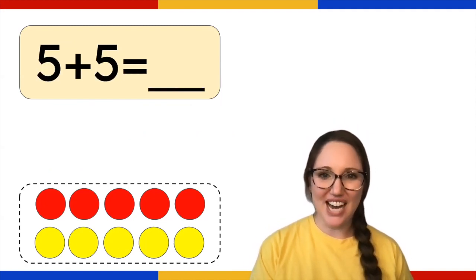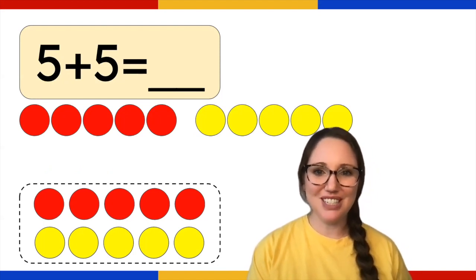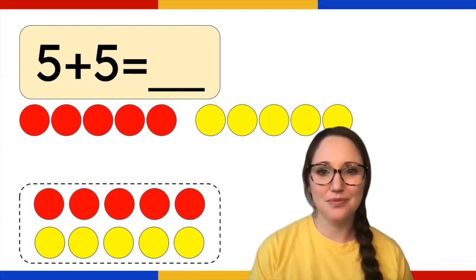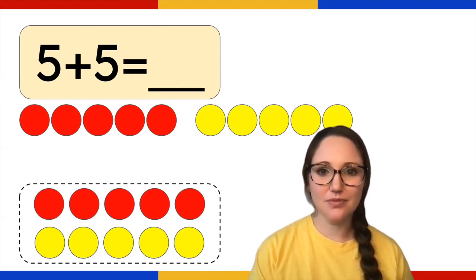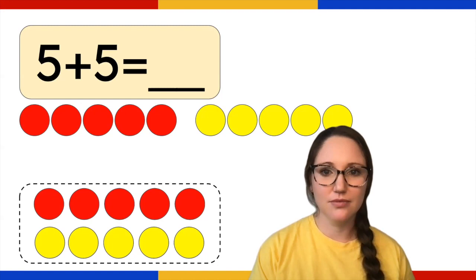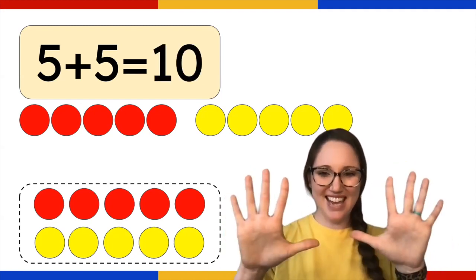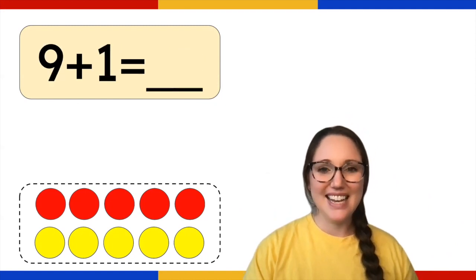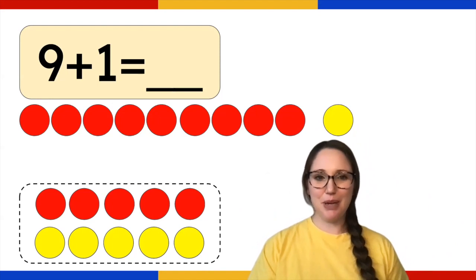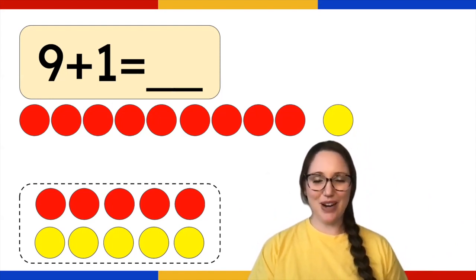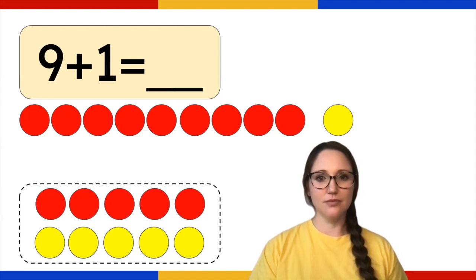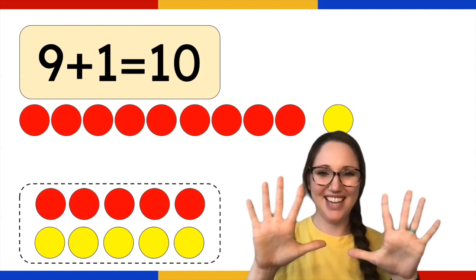Five plus five. Make your picture with your objects, then write your number sentence and write your answer. Five plus five is 10. Nine plus one — remember to make your picture, write your number sentence and then write your answer. Nine plus one is 10. Excellent work. Give your brain a kiss.